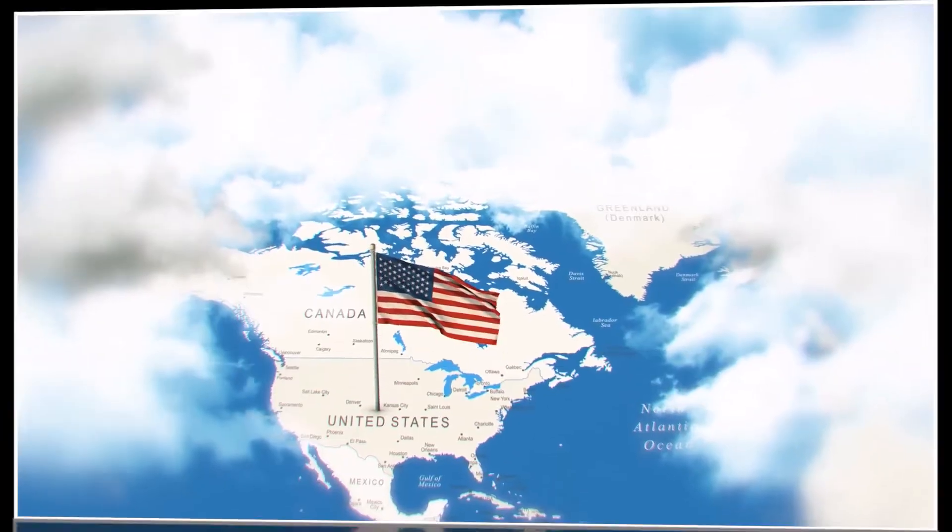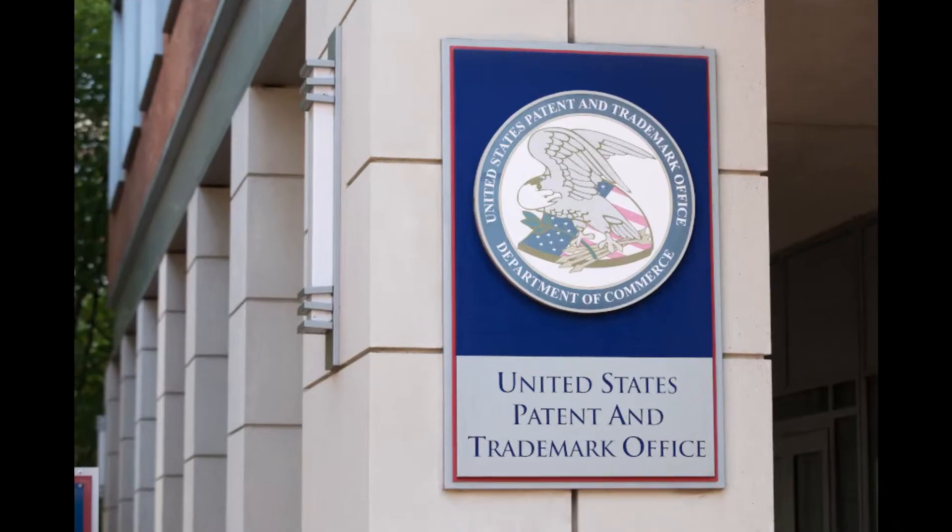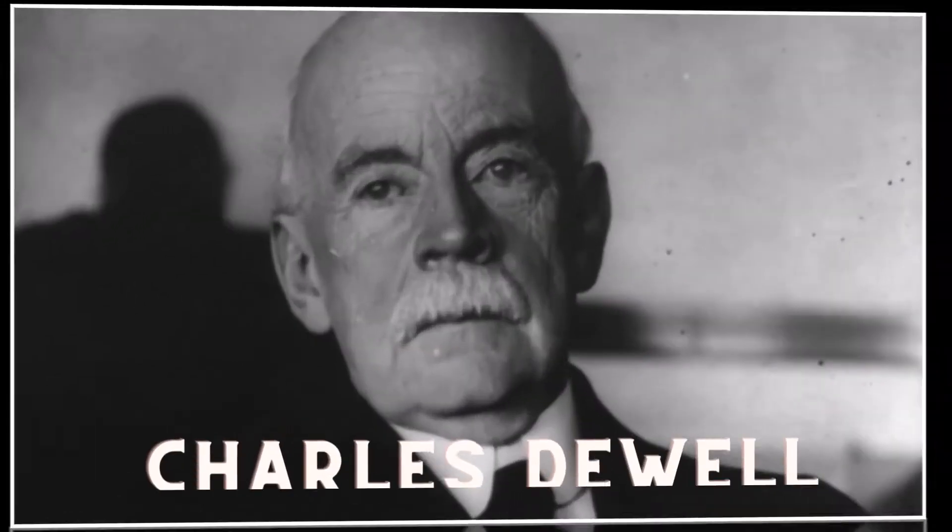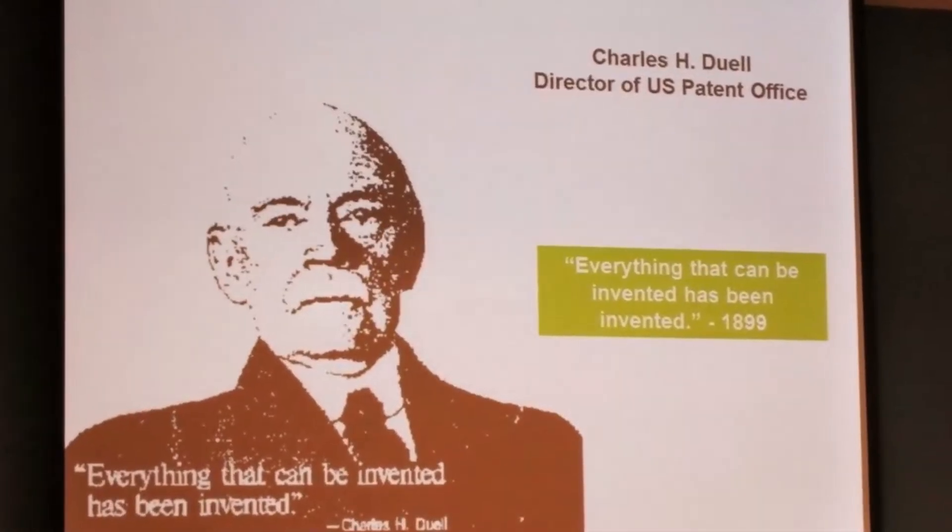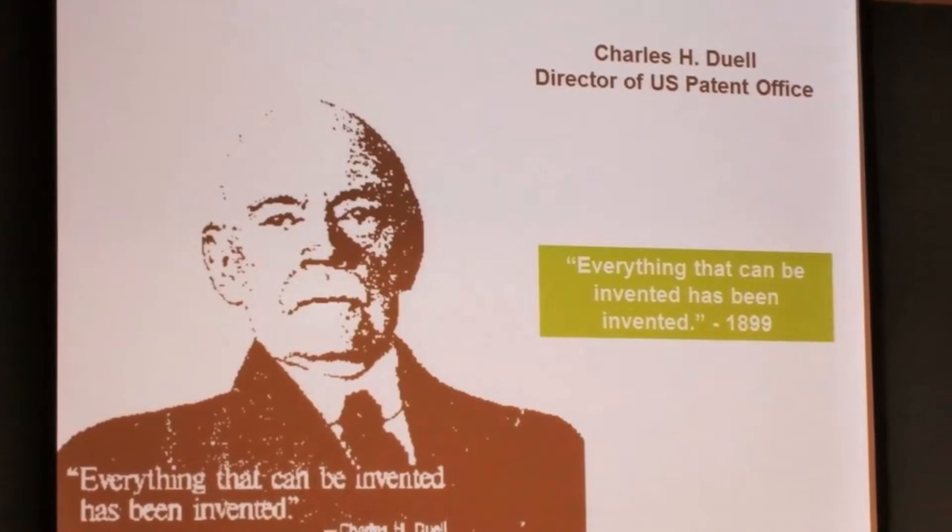In 1899, the U.S. Commissioner of Patents, Charles Duell, resigned and petitioned Congress to abolish his own office. He asserted, everything that can be invented has already been invented.